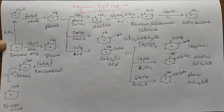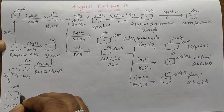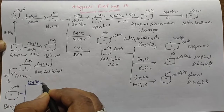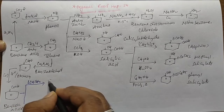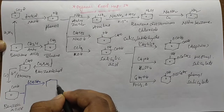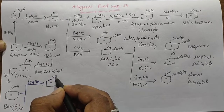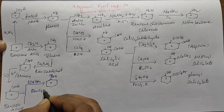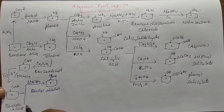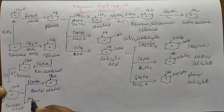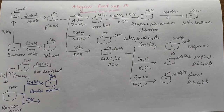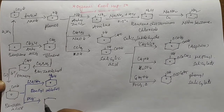Benzoic Acid reacts with two different reagents. When Benzoic Acid reacts with Lithium Aluminium Hydride (LiAlH4), it can form Benzyl Alcohol. When Benzoic Acid reacts with Phosphorus Pentachloride, Phosphorus Trichloride, or SOCl2, it can form Benzoyl Chloride.